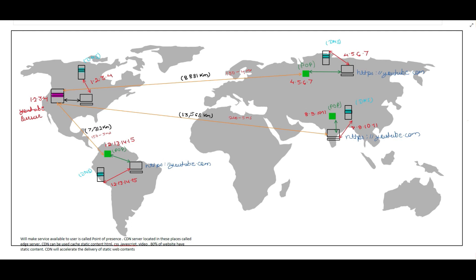Nowadays, web content is around 80% static content. We can cache that static content in the CDN network and serve traffic to clients from there. When a user wants to connect to youtube.com, for example the client from Russia, the request first goes to the DNS, which returns the nearest CDN to the client. The client connects to that nearest CDN. If the video is present in the CDN, it returns the video to the client. If the video is not present, the CDN fetches the video from the original YouTube server, caches it, and sets a TTL — Time to Live. When the TTL expires, it deletes that particular video.